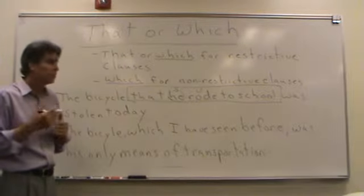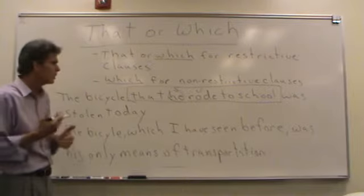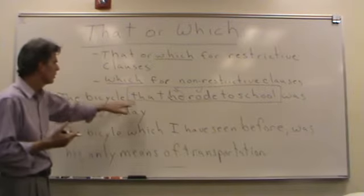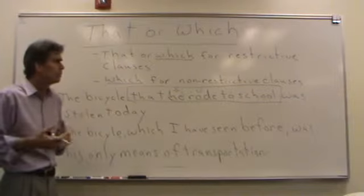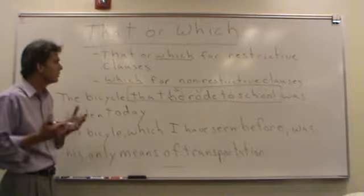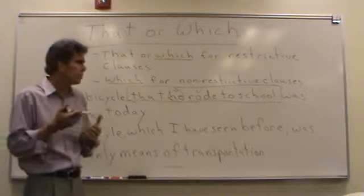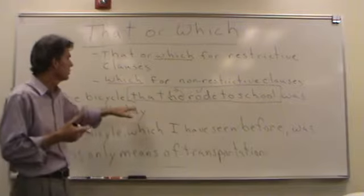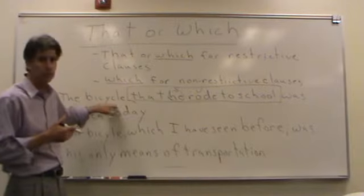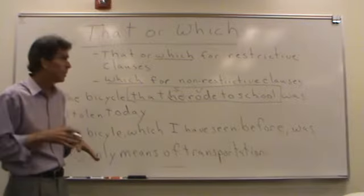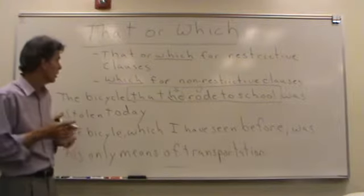It probably wouldn't be such an important sentence if he hadn't ridden the bicycle to school — we're talking about something that happened today and this person has no way of getting home. So it really is restrictive. It identifies the bike and is essential to the sentence. This one really does lean towards a restrictive clause because it identifies which bicycle — it's not any bicycle, it's the one that he rode to school today.